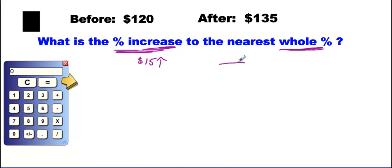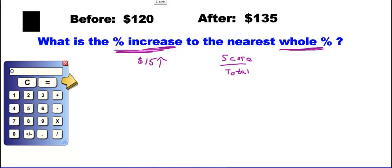How do you turn your exam score into a percent? You divide two numbers — a top number and a bottom number — where the bottom is the total and the top is your score. Here we're going to do the same: take the increase and divide it by the total, then convert that answer to a percent.